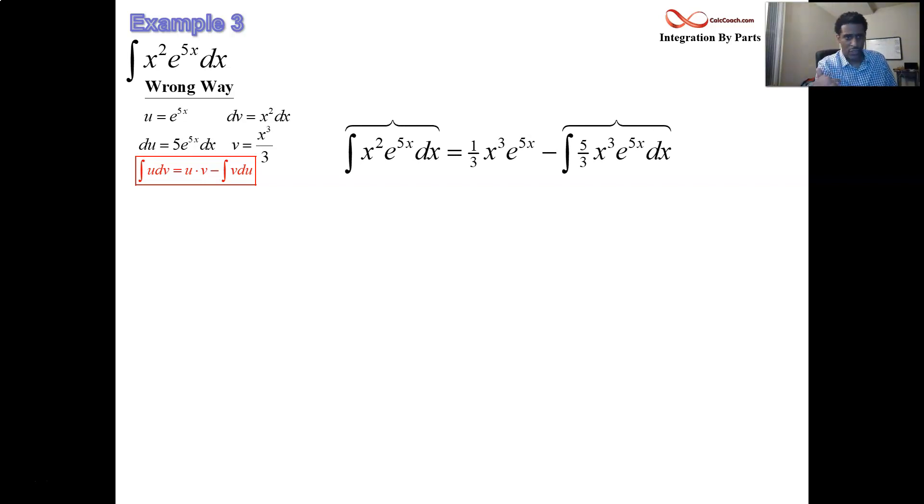And so when you put together the integration by parts formula, uv minus the integral of vdu, you're trading in your integral for the product, 1 third of x cubed e to the 5x. But then the integral vdu is 5 thirds x cubed e to the 5x. You traded in an x squared e to the 5x integral for an x cubed e to the 5x integral. You've gone up in exponent. It isn't getting simpler. It's getting more complicated. It should be the other way around. So if you ignore the hierarchy, these are the kind of things that could happen. You don't get any progress.